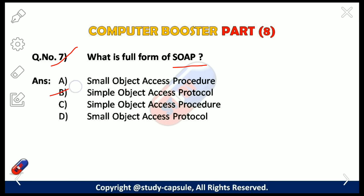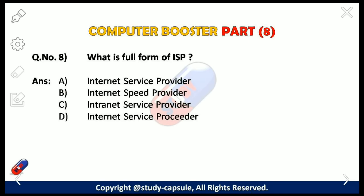Our seventh question: what is the full form of SOAP? The answer is B — Simple Object Access Protocol. SOAP is a protocol specification for exchanging structured information in the implementation of web services in a computer network.